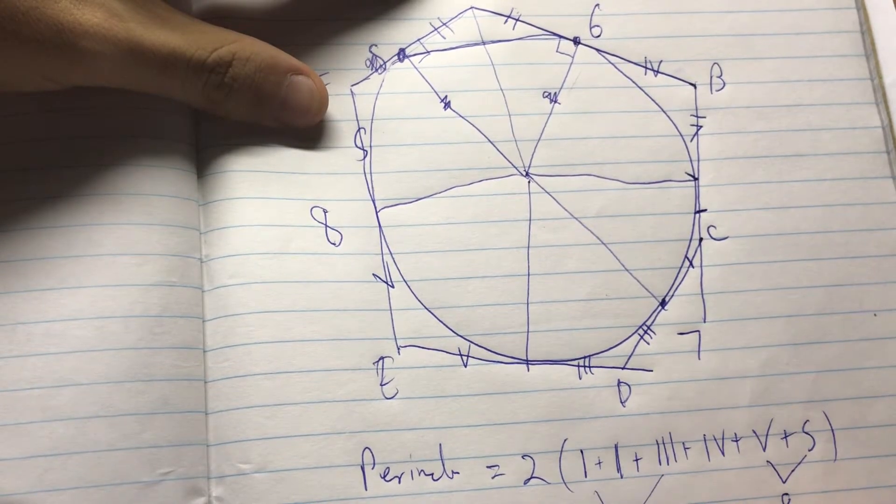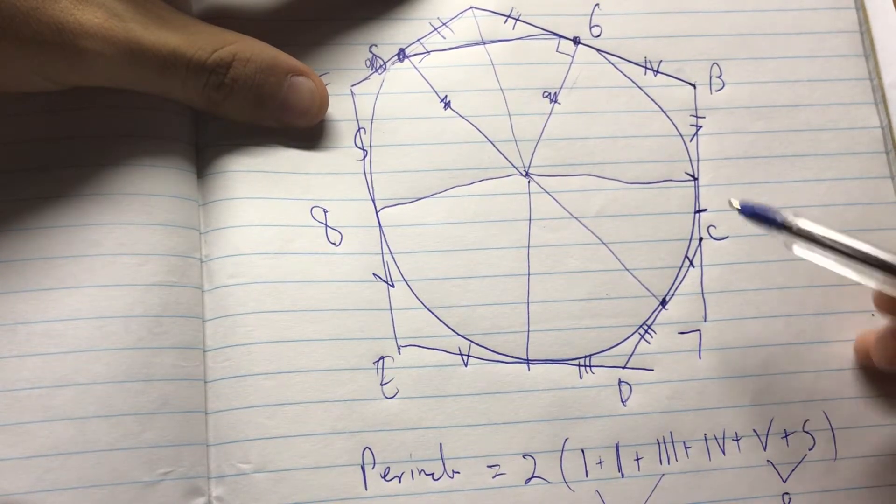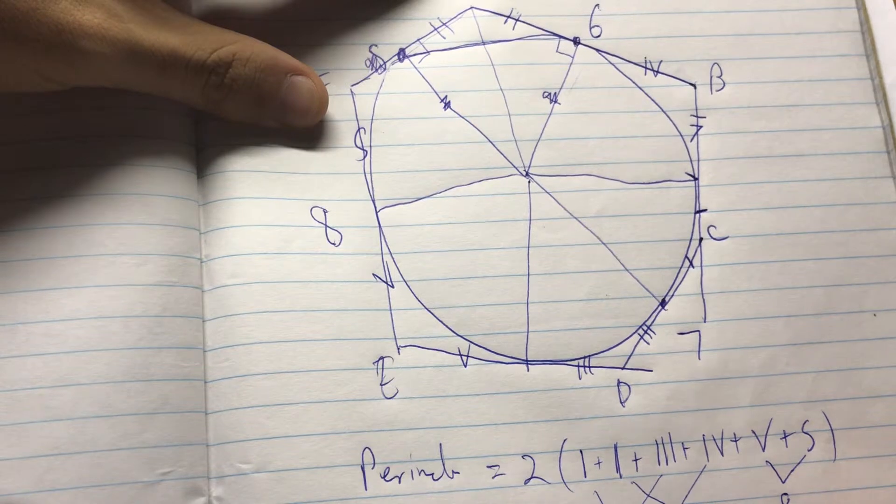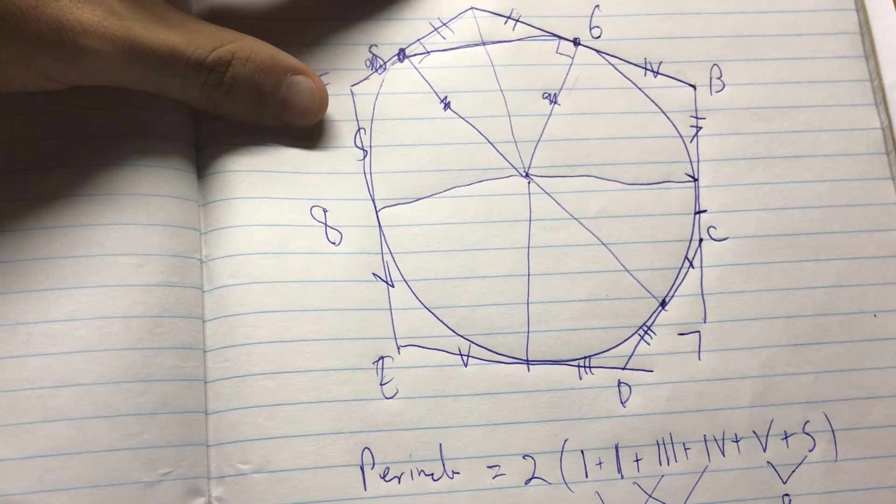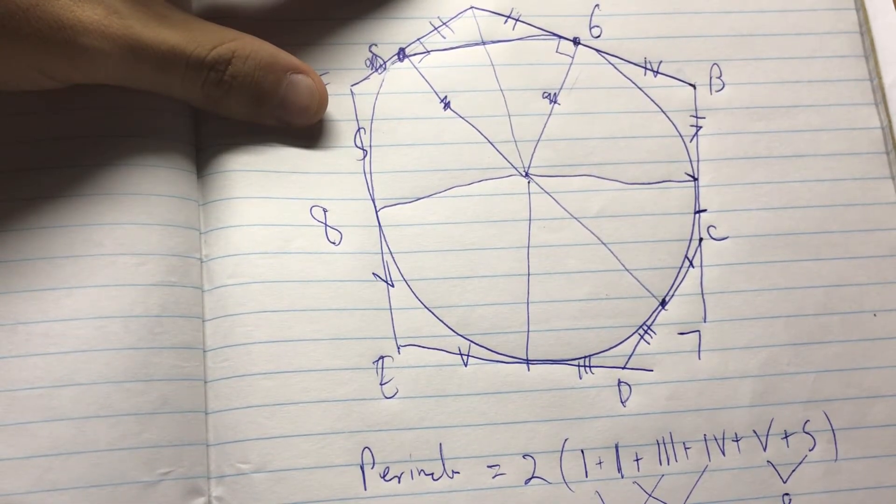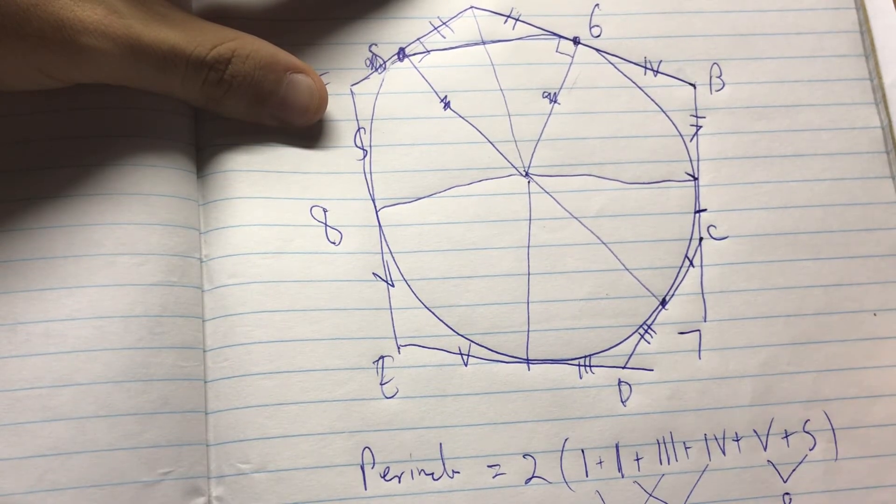And then you notice that five plus s is eight. So, one plus three is seven. Two plus four is six. Right? So, it is, it is 42. That is 42.